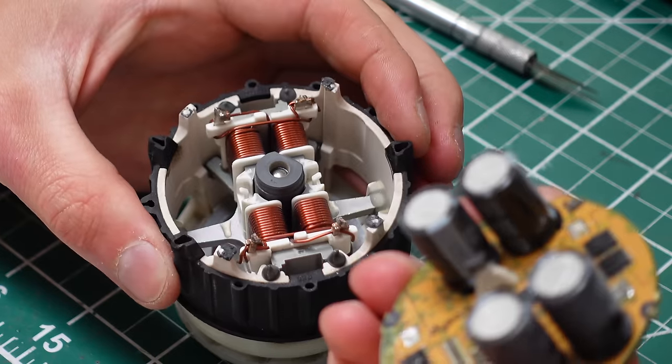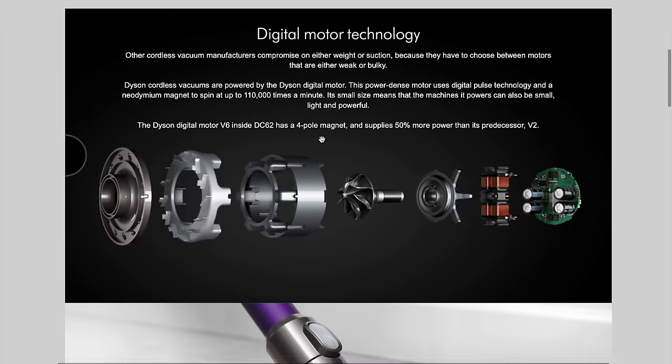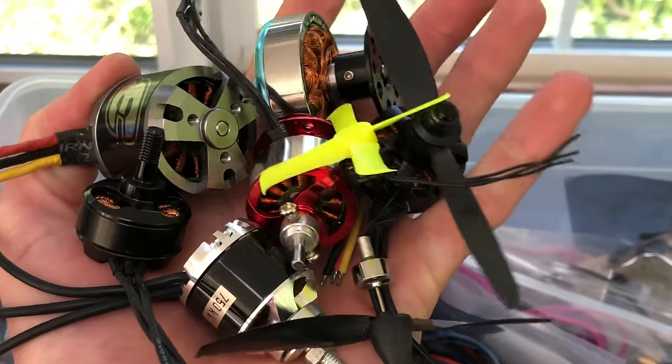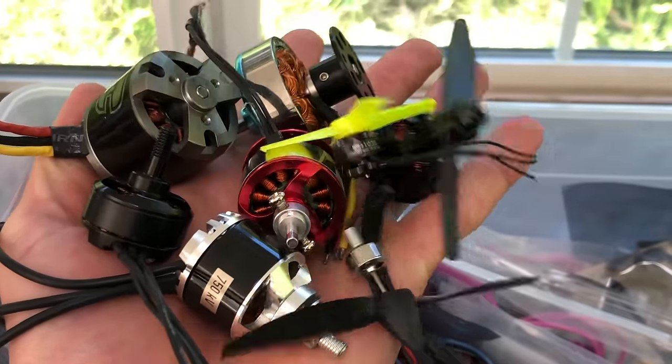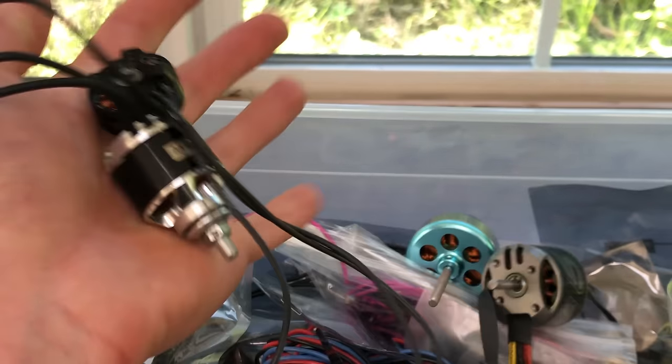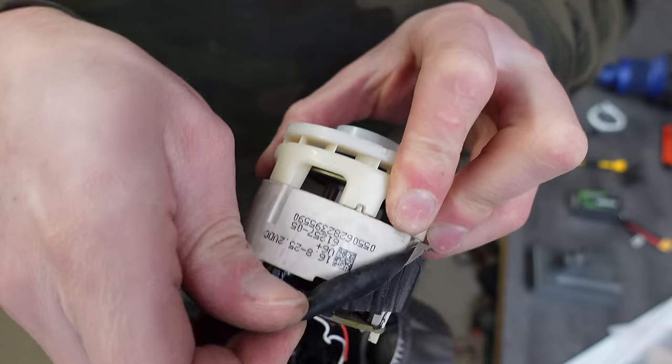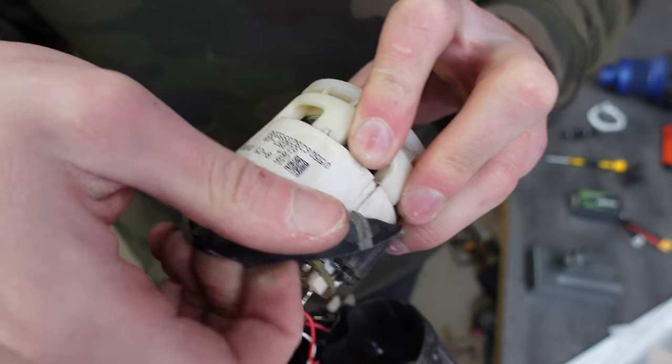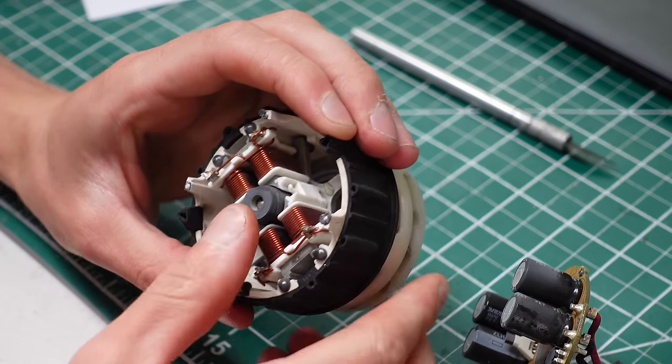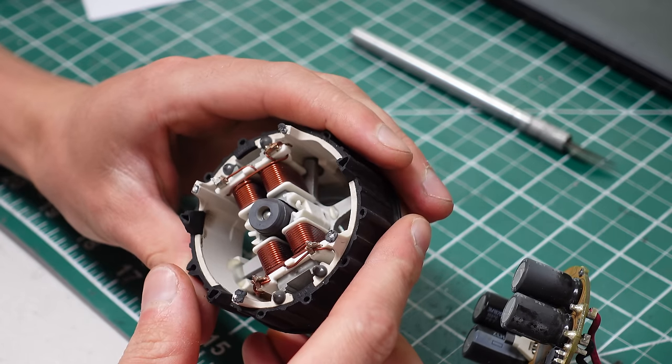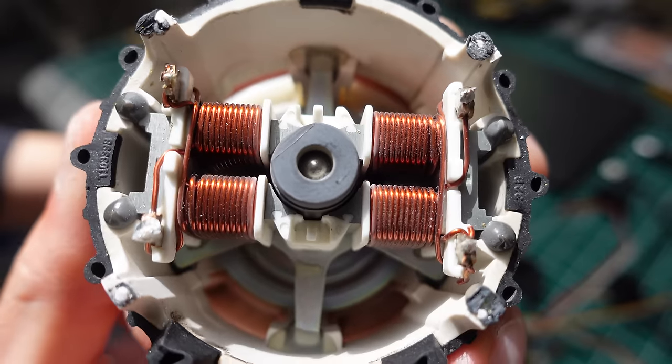Step one is choosing an electric motor that will rival the Dyson's. Dyson uses what they call a digital motor. This is just marketing lingo for a brushless motor with an electronic speed controller. Similar to the ones we use in our RC planes and drones. The thing that makes the Dyson motors different is that they put a ton of effort into optimizing for efficiency and manufacturability.